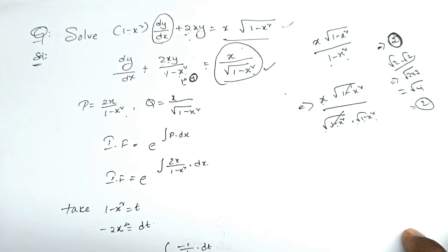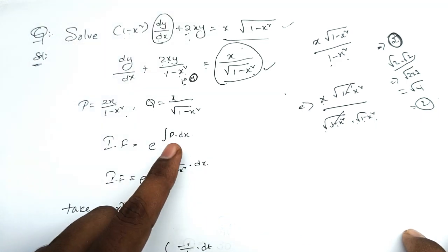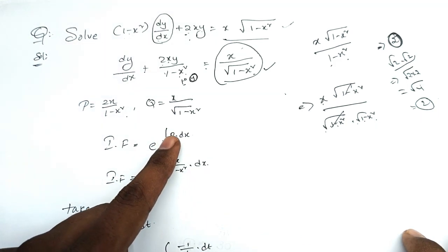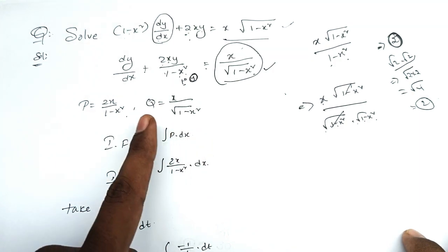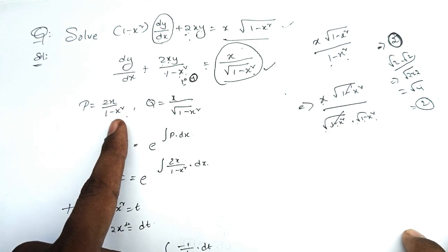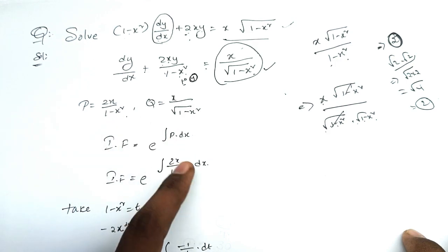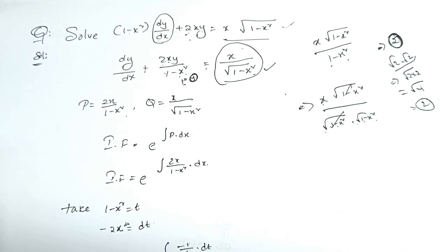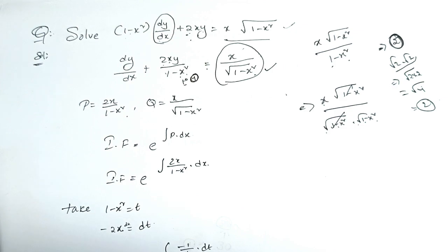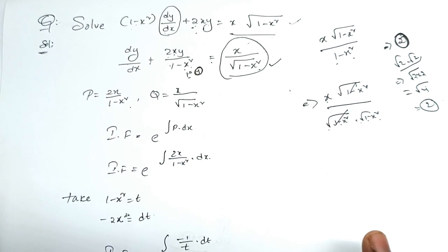The integrating factor formula is e^(∫P dx). Here P = 2x/(1 - x²), so the integrating factor is e^(∫2x/(1 - x²) dx). We can evaluate this integral using a formula.